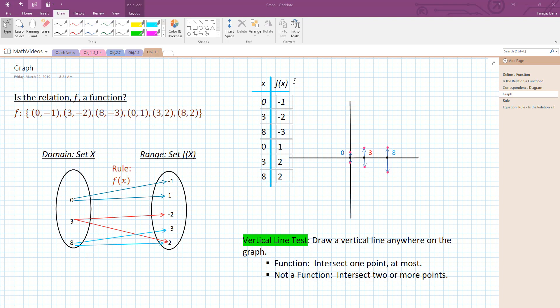And so we can see that the 0 mapped to negative 1, the 3 mapped to negative 2, 8 to negative 3, 0 to 1, 3 to 2, and 8 to 2.